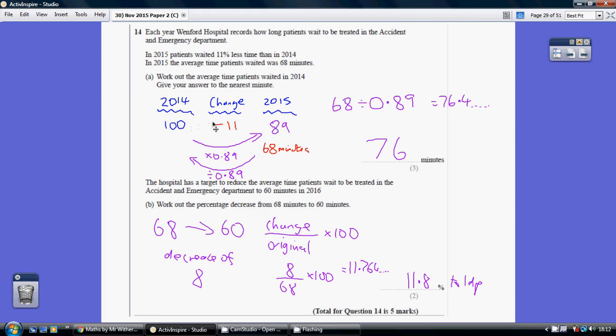So if we had 100 in 2014, 11% less would mean we had 89 in 2015. So what is our multiplier left to right? It is multiplying by 0.89. Equally going right to left, we divide by 0.89.